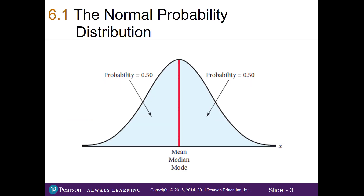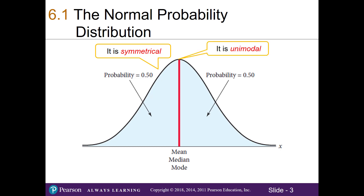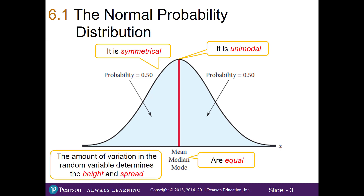The normal distribution is a bell-shaped distribution with the following properties. First, it's symmetrical in that each side is a mirror image of the other. It is unimodal, meaning it has only one mode. The mean, median, and mode are equal. The amount of variation in the random variable determines the height and spread of our curve, and our distribution is asymptotic in that it does not ever reach the x-axis.